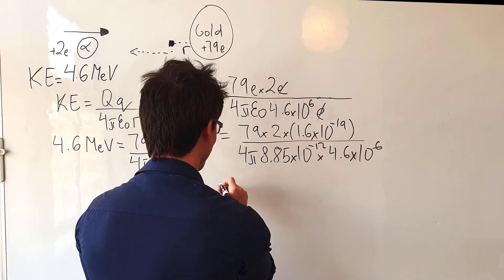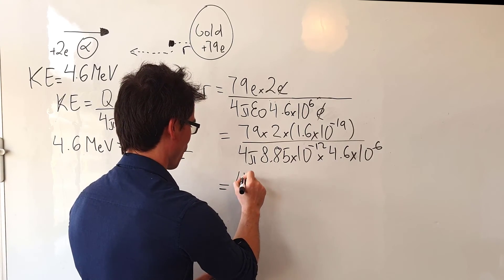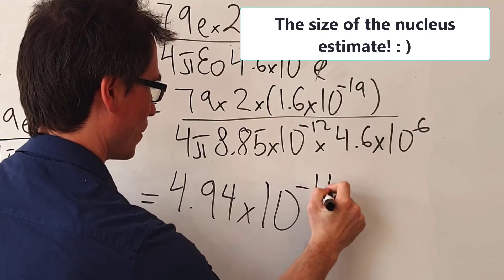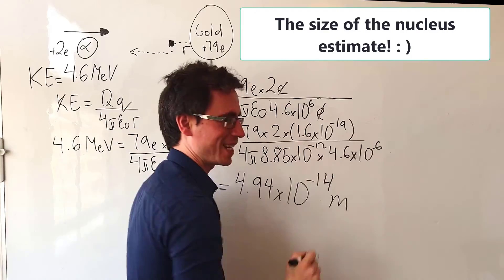When we put this into calculator, we get a number which is about 4.94 times 10 to the power of minus 14 meters.